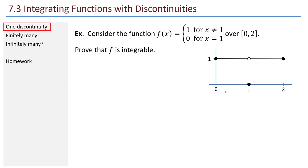We begin with maybe the simplest example, a function that is discontinuous just at one point. This function looks like basically a value of 1 all the way across, but just at the one point when x is 1, it has a value of 0. Let's prove that this function is integrable.